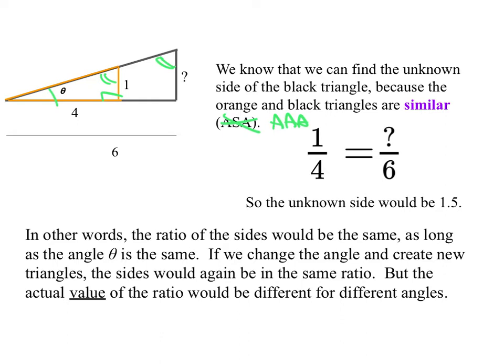And therefore, we know that the sides are in the same ratio, that the vertical side to the horizontal side in one triangle as it is the other. And so we say the unknown side would be 1.5, just by arguing by similar triangle stuff.